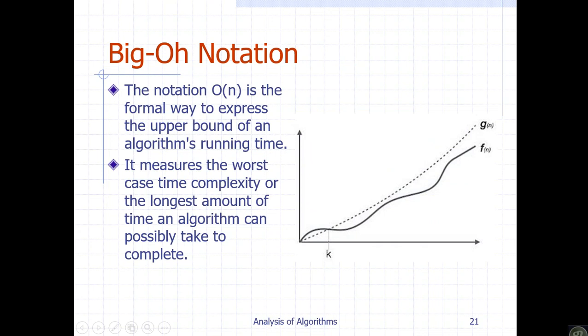This is f of n. The g of n represents the bound state — the maximum time for the algorithm. Big O notation gives us the upper bound, represented by c times g of n.